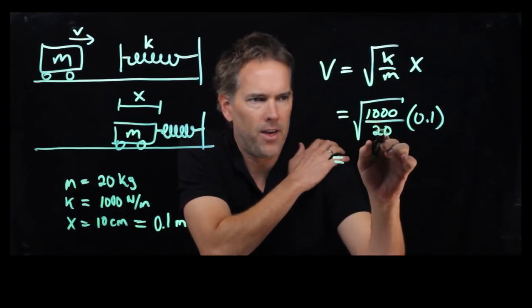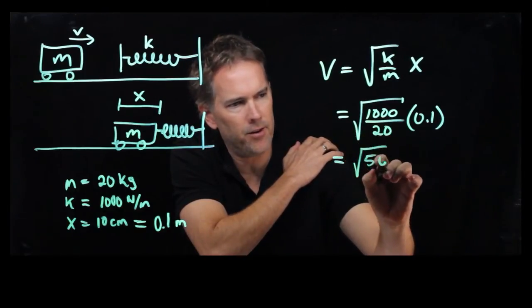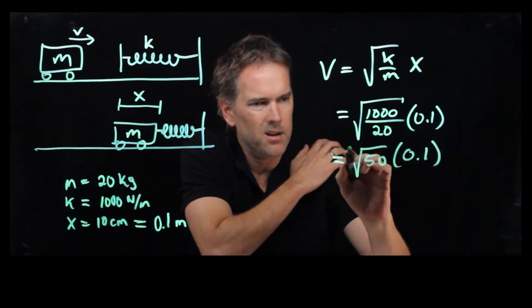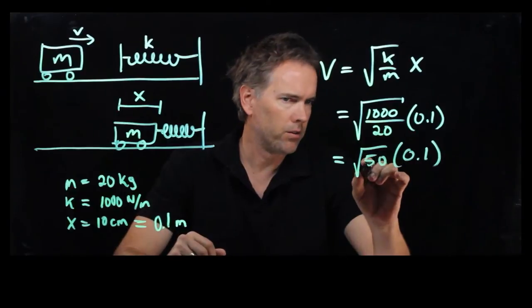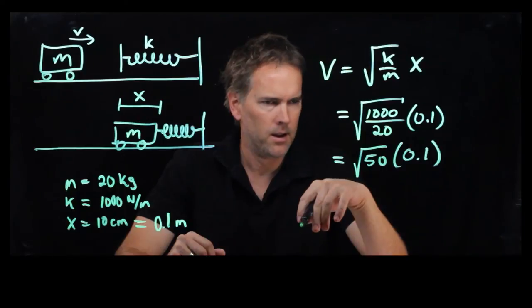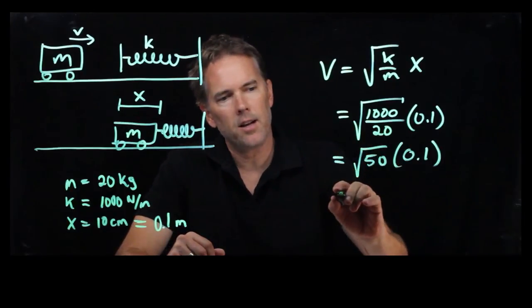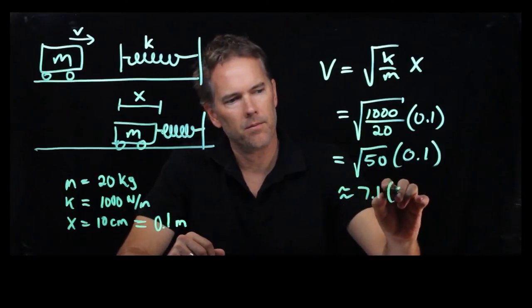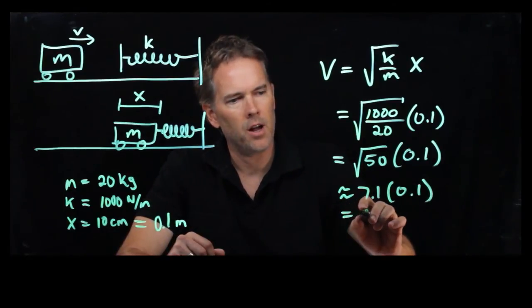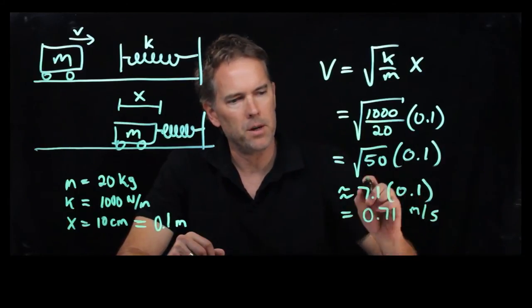So what do we get here? Well, square root of 1,000 over 20, that's the same as 100 over 2, which is the same as the square root of 50. We've got a 0.1 hanging out there. You can almost do this in your head, right, because 50 is really close to 49. And we know that the square root of 49 is 7. So let's take 7, and we'll just add a little bit to it. 7.1, and we're going to multiply that by 0.1, so this becomes 0.71 SI units, meters per second.